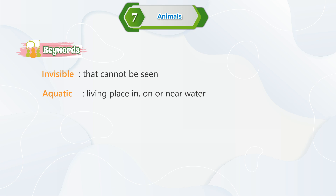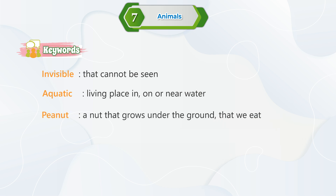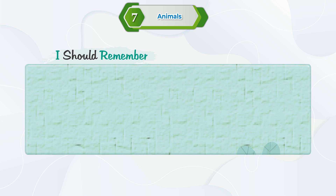Keywords. Invisible: that cannot be seen. Aquatic: living in, on, or near water. Peanut: a nut that grows under the ground that we eat.